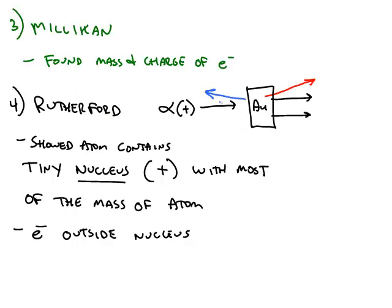the gold foil experiment, involved shooting a relatively heavy alpha particle at a very thin layer of gold foil. Now the expected result was that these alpha particles would pass through the gold foil, represented by the two black arrows on the right,